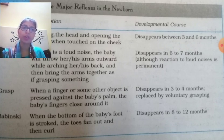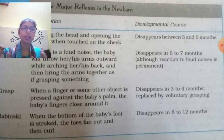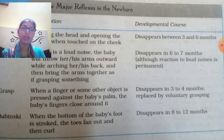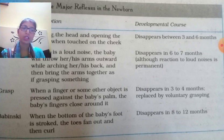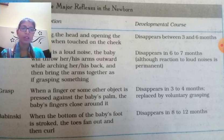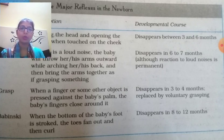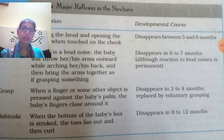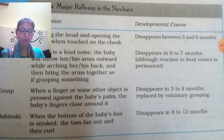Regarding developmental timelines: the rooting reflex disappears between three and six months. The Moro reflex disappears at six to seven months, although reactions to loud noises remain permanent. The grasp reflex disappears at three to four months and is replaced by voluntary grasping. The Babinski reflex disappears at eight to twelve months. These are the reflexes present in the newborn and those developing during infancy.